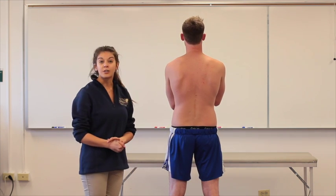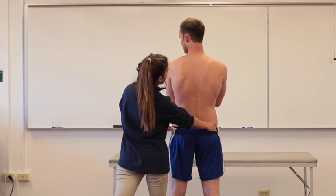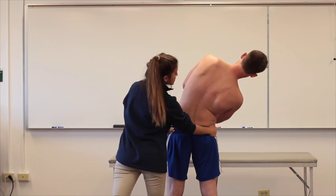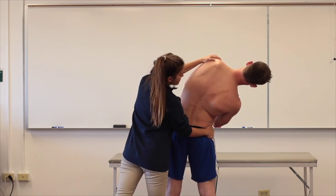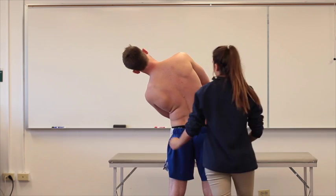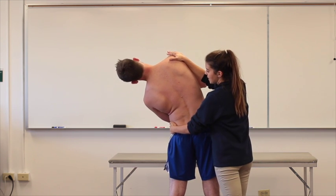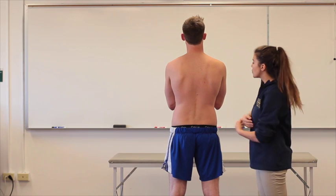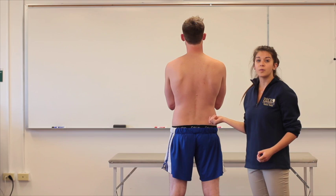Now we're going to go into lateral flexion. Connor, can I have you go ahead and bring your whole torso over to the right-hand side? Is that as far as you can go? I'm going to apply some overpressure — any pain? No. And let's go ahead and go to the other side. Any pain? No. I'm going to apply some overpressure. Any pain? No. Here I'm looking to make sure that his spinal curvature is maintained. If there were to be a break in that spinal movement, we would know that there's a hinge point that we need to work with.